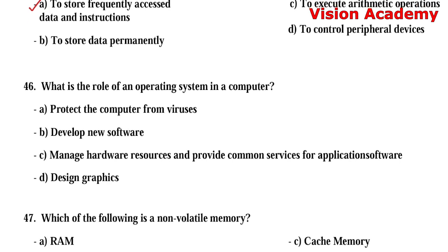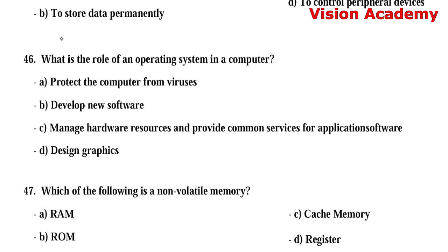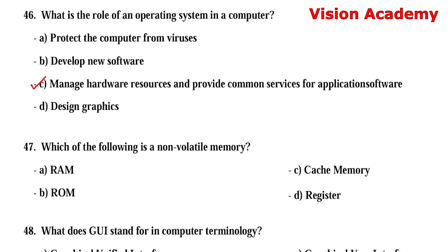Question 46: What is the role of an operating system in a computer? Option A: protect the computer from viruses. Option B: develop new software. Option C: manage hardware resources and provide common services for application software. Option D: design graphics. Option C, manage hardware resources and provide common services for application software, is the right answer.